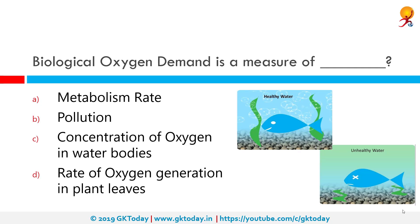Biological oxygen demand is a measure of what? It is a measure of pollution in a water body. Biochemical oxygen demand, or BOD, is a chemical procedure for determining the amount of dissolved oxygen needed by aerobic biological organisms in a body of water to break down organic material present in a given water sample at a certain temperature over a specific time period.